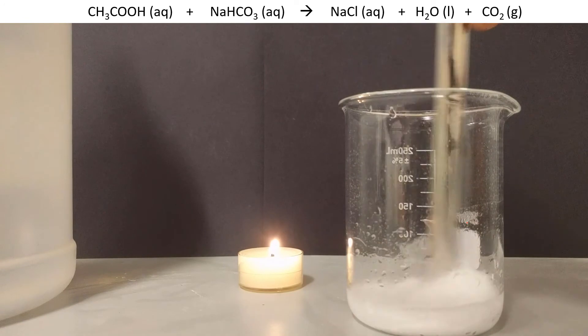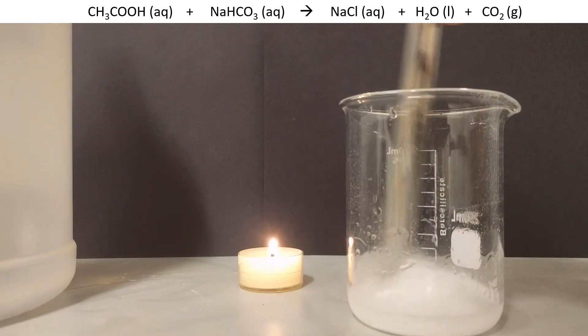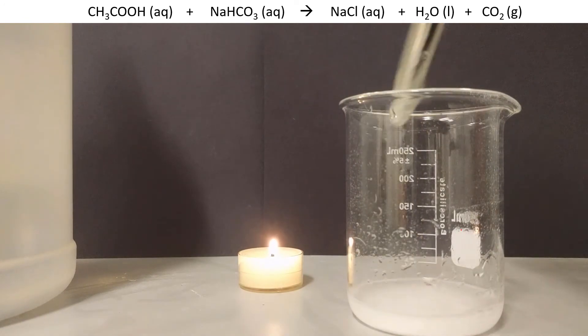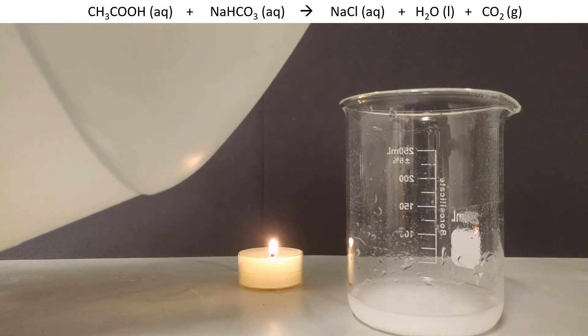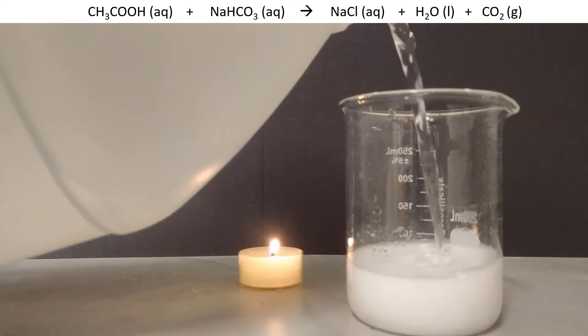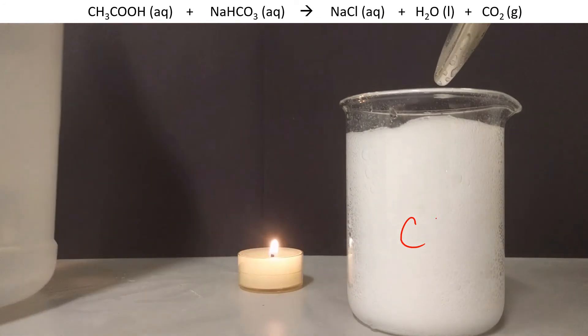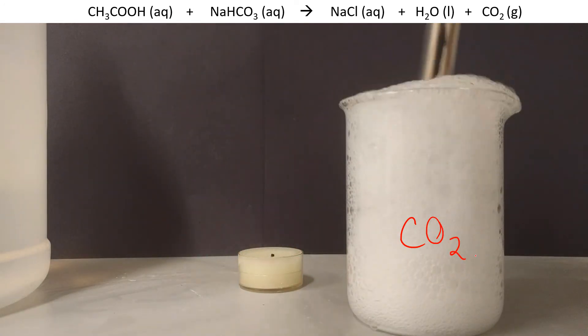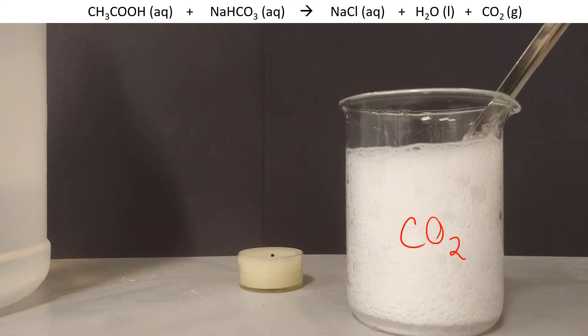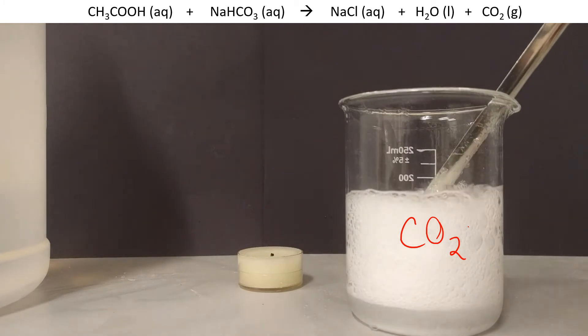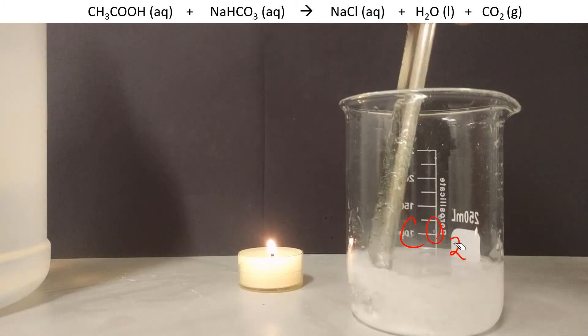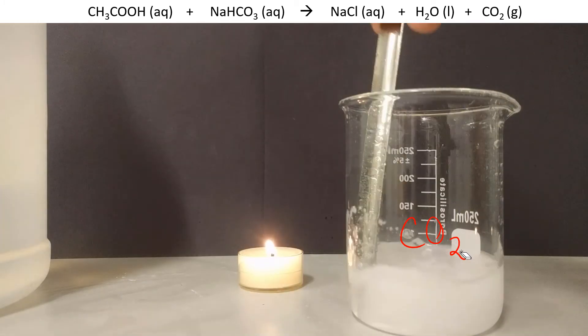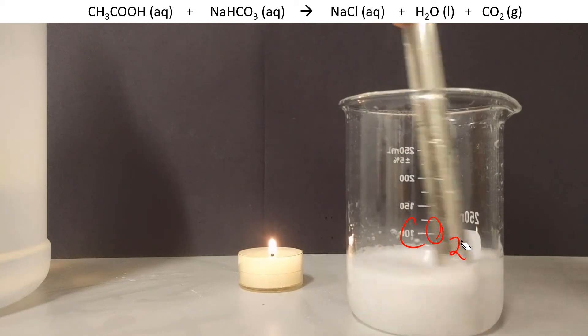So a neat thing you can do is like a fake kind of magic trick. So as I'm adding more vinegar to the baking soda, I'm making more CO2. And that beaker is going to fill up with carbon dioxide. Careful not to overflow it. Now to prove that there's carbon dioxide in there, because you're looking at it, you're like, I don't see anything. It's just air. How do I know it's carbon dioxide?